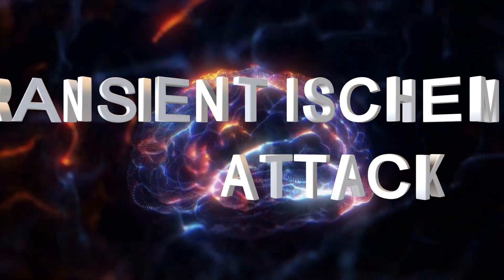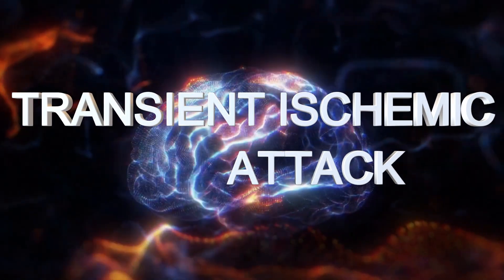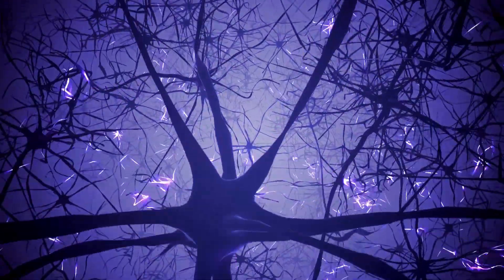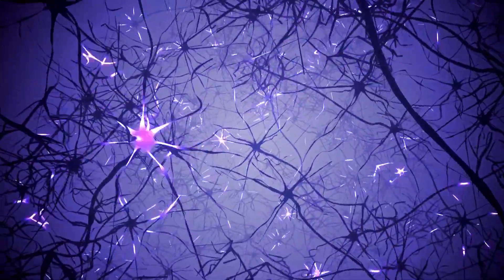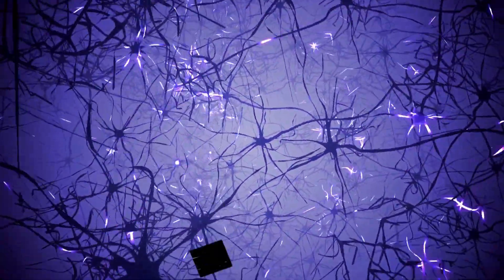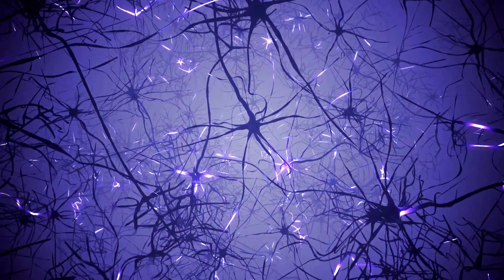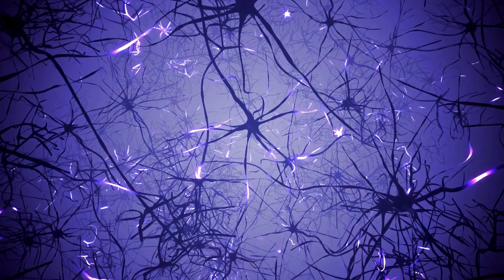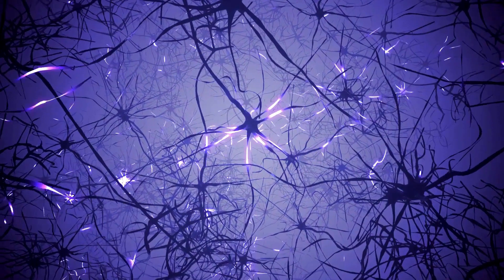In this video we are going to discuss transient ischemic attack. Let's imagine your brain is like a busy city with lots of roads and traffic. Sometimes there might be a tiny bump in one of those roads that briefly slows down the traffic.